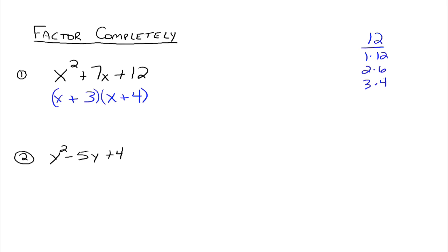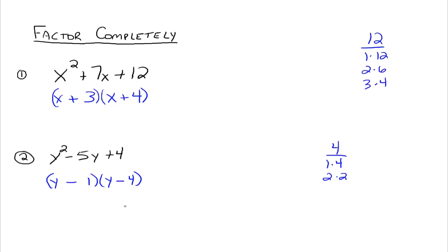Example 2: y squared minus 5y plus 4. Is there a greatest common factor? No. We have three terms of the form x squared plus bx plus c with leading coefficient 1. We need factors of 4 that add up to 5, because the constant term is positive. The factors are 1 and 4, and 2 and 2. Since 1 and 4 add up to 5, those are the ones we want. So we write y minus 1 times y minus 4 — both minus signs since the constant is positive and the middle term is negative. y squared minus 5y plus 4 factors into y minus 1 times y minus 4.